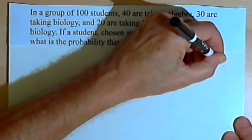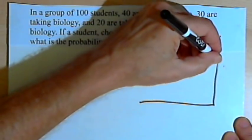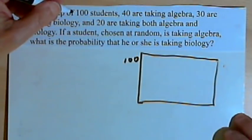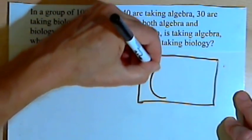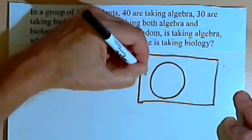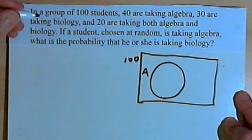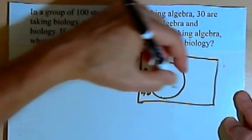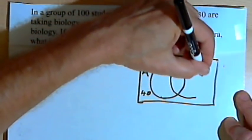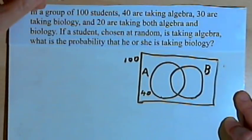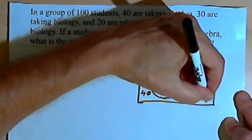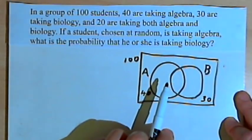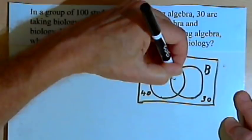Let's visualize this information with a Venn diagram. I've got 100 students all together — that's going to be the universe. Within that universe there are two groups. There's group A, for the students who are taking algebra, and there are 40 students in that group. Overlapping with that is group B — the students who are taking biology. There are 30 students in that group, and in the overlapping area are the students who are taking both algebra and biology, so there are 20 students there.